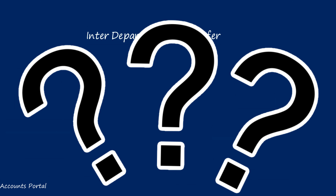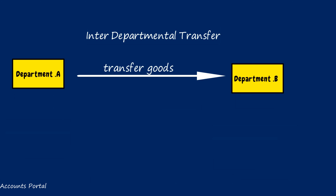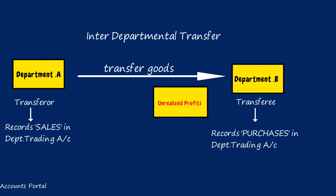What is inter-department transfer? One department transferring goods or services to other departments within the entity is known as inter-department transfer. Department A transfers goods to Department B. Department A records it as a sale; Department B records it as a purchase. These inter-department sales and purchases are shown separately so the entity can easily differentiate inter and intra sales and purchases and evaluate each department's performance individually.